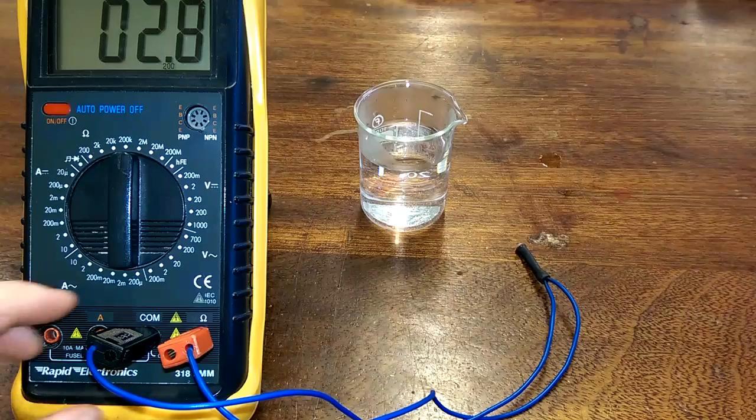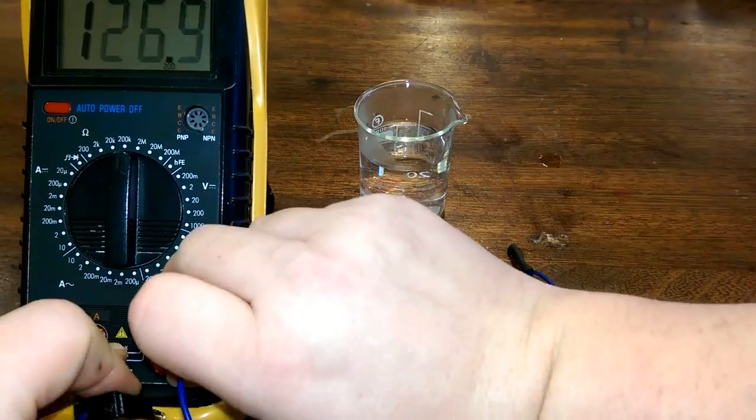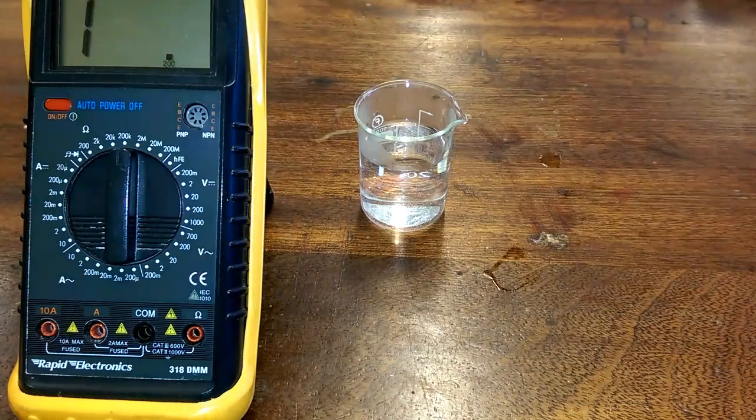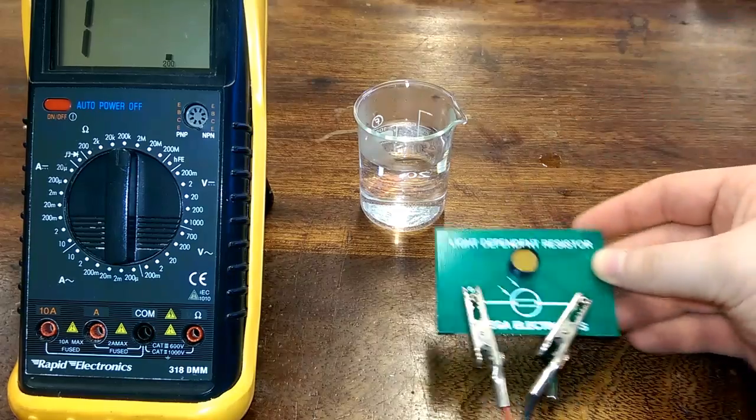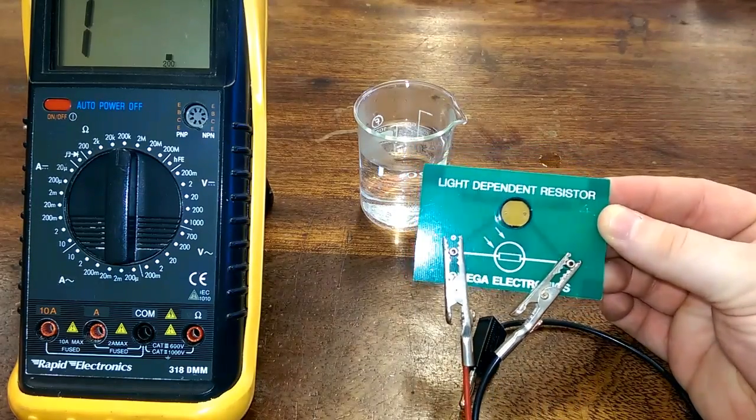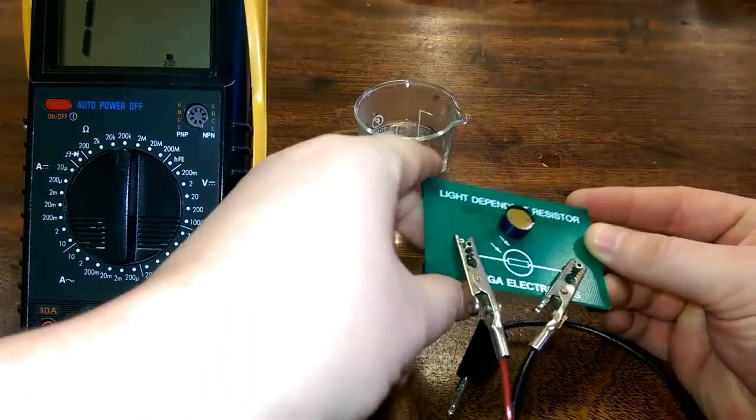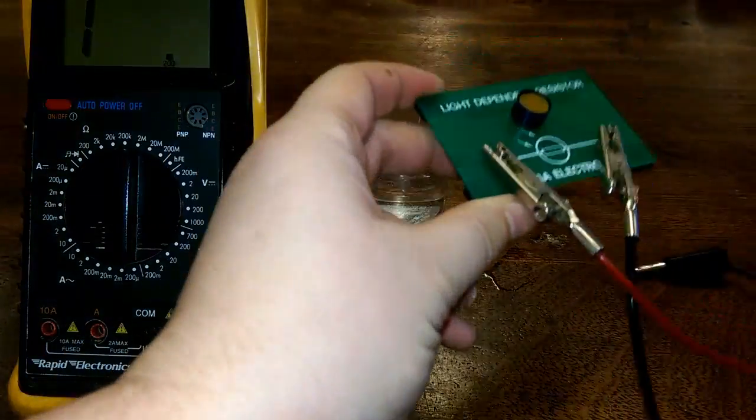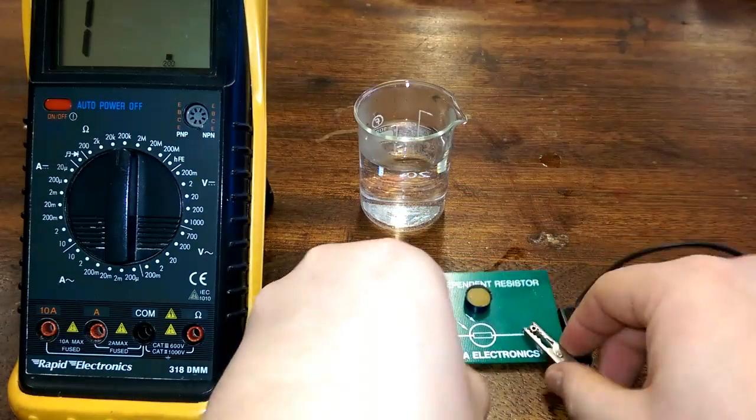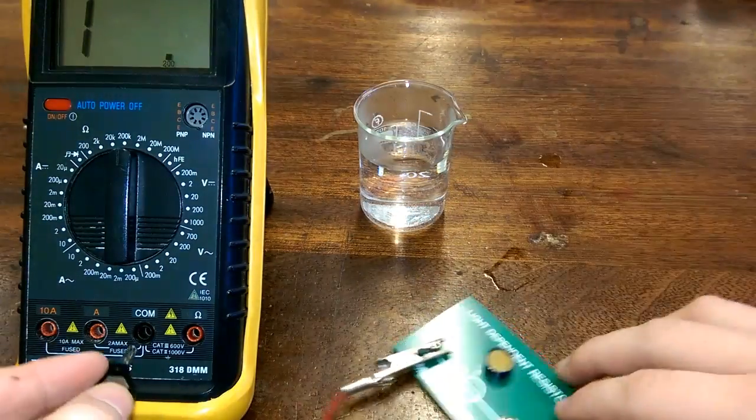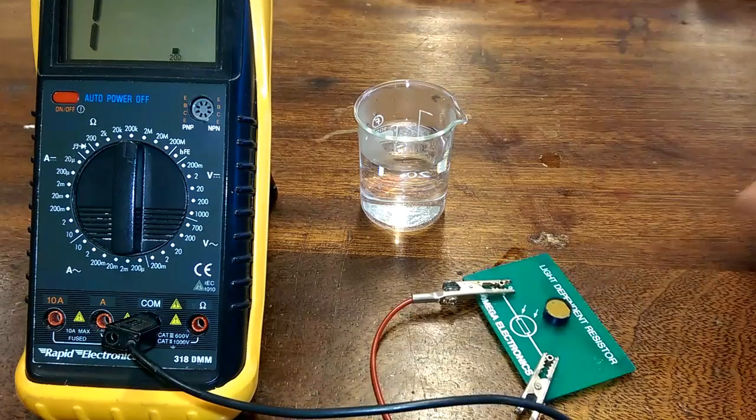Right. Now, the other component that you need to know about is quite similar. It is a light-dependent resistor. There's this bit here. And a light-dependent resistor is very similar. Except, I think you can probably guess what the resistance of a light-dependent resistor depends on.